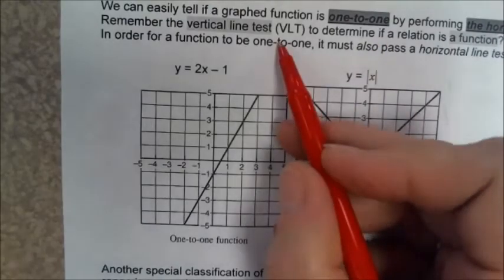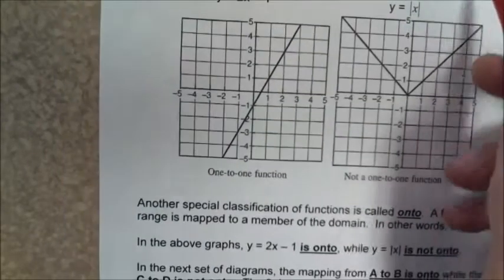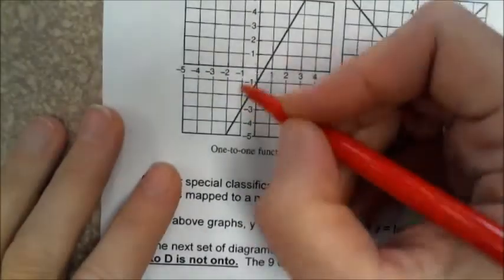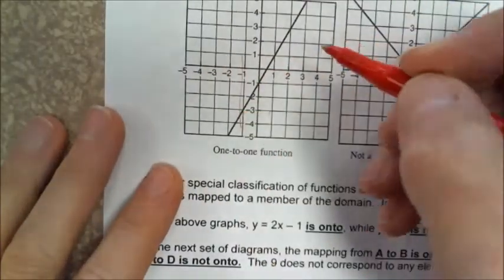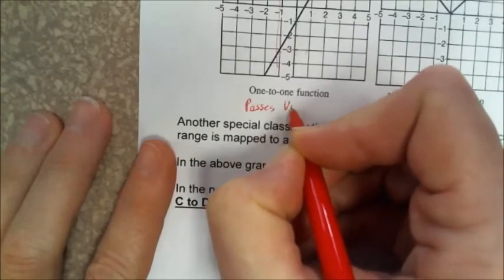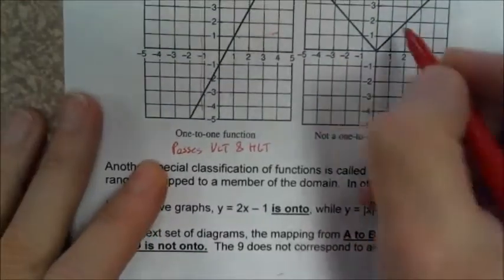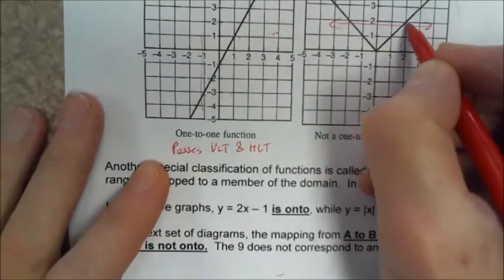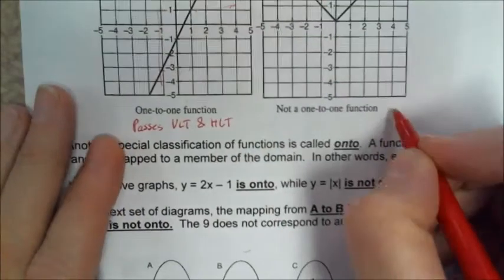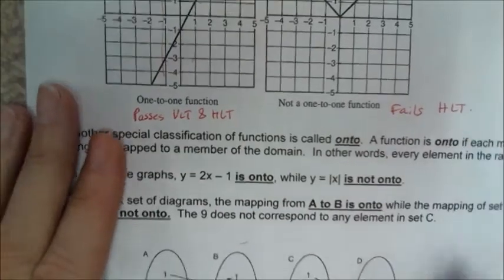Remember that the vertical line test tells you the relation is a function. The y=x graph is one-to-one because all vertical lines and all horizontal lines touch it only once — it passes both the VLT and the HLT. But y=x² is not one-to-one because if you draw a horizontal line, it touches it twice — it fails the horizontal line test.